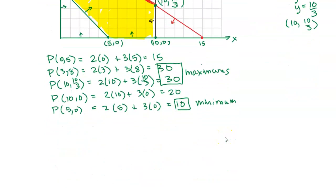Okay, so what's our conclusion? First of all, the easy thing is the minimum. So the p function, I guess I've been saying it's profit, but we don't really know for sure. But our p function has a minimum of 10 when x is equal to 5 and y is equal to 0.